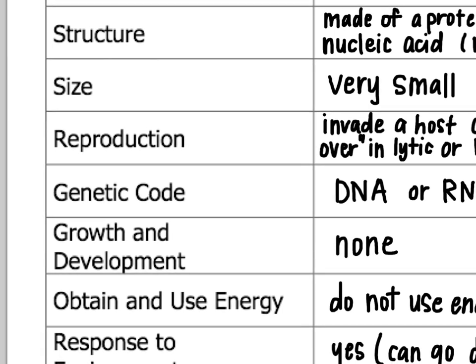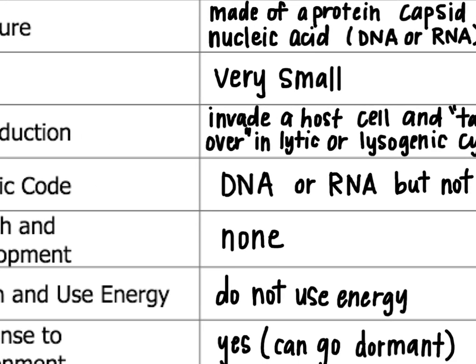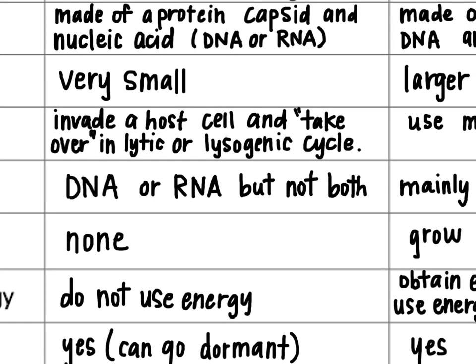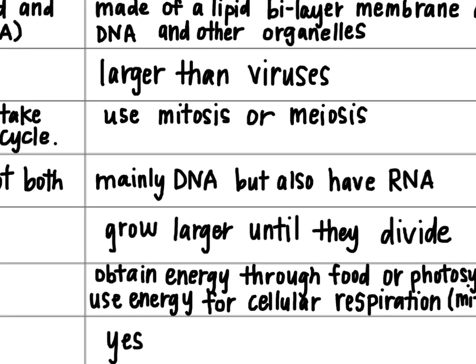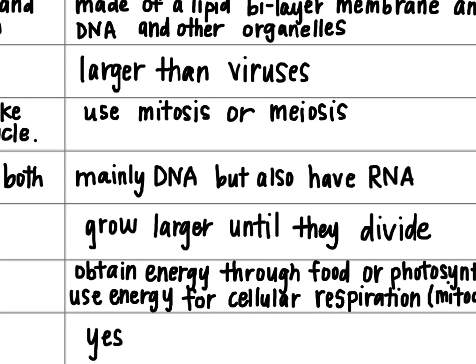The genetic code for a virus will either be DNA or RNA, but never both — it'll be one or the other. Inside of a cell, you have mainly DNA, and that might be inside of a nucleus or it might not be. They'll also have some RNA, but the main genetic information is in the DNA.